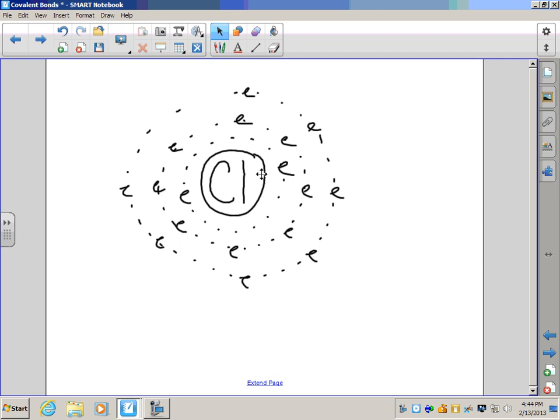For example, drawing a chlorine atom gets rather complicated. You've got the nucleus and then three different levels of electrons with two in the first energy level, eight in the second, and seven in the third. It gets a little bit complicated.